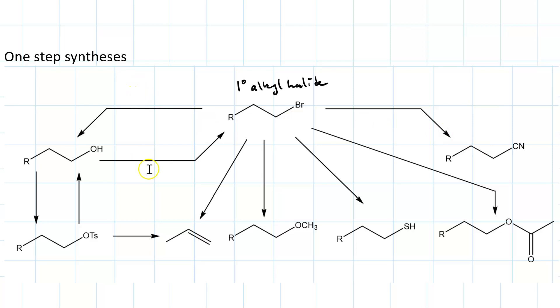You need to be able to fill in this table from memory. So, starting from the halide, what nucleophile would we use, for instance, to make an alcohol? Since it's a primary alkyl halide, SN2 will dominate when you use sodium hydroxide, a strong base.